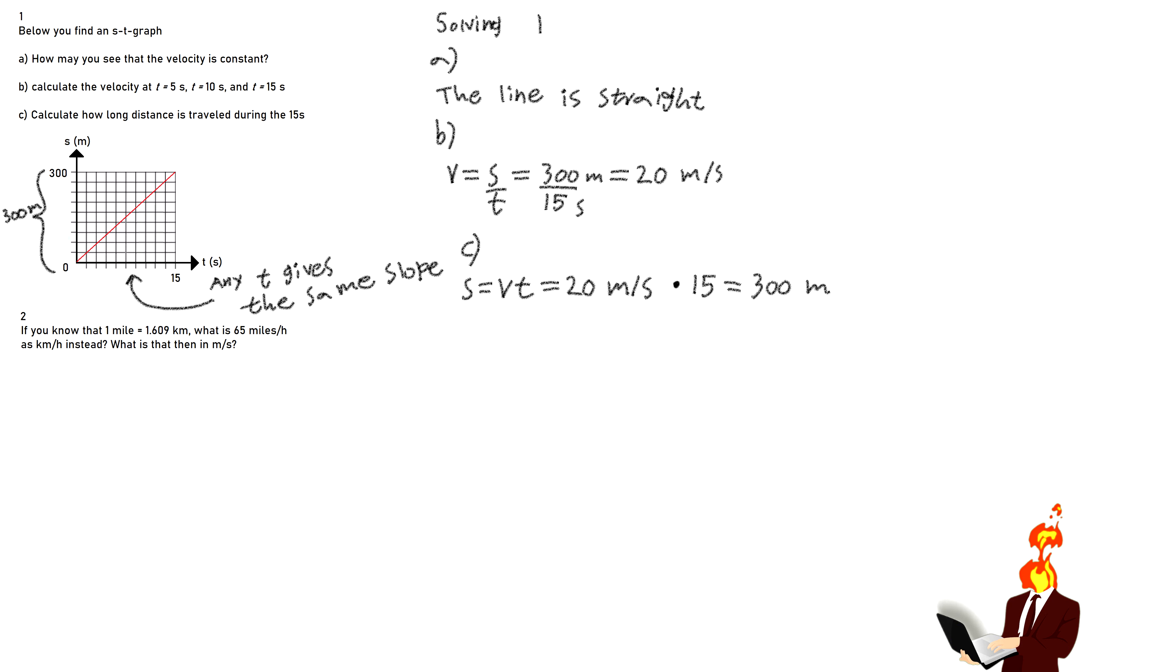Part C. Calculate how long distance is traveled during the 15 seconds. You know that the formula for velocity is S divided by T. This means that you can rearrange the formula and get that the distance is equal to the velocity multiplied by the time. If you take 20 meters per second, multiplied by 15 seconds, that is 300 meters.